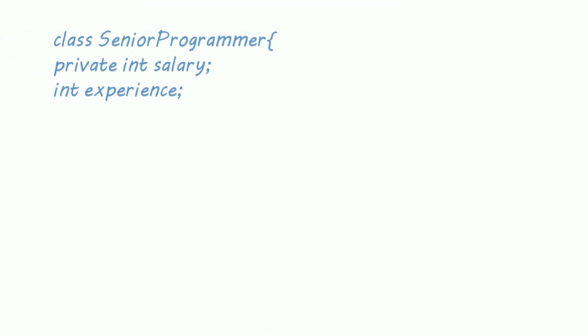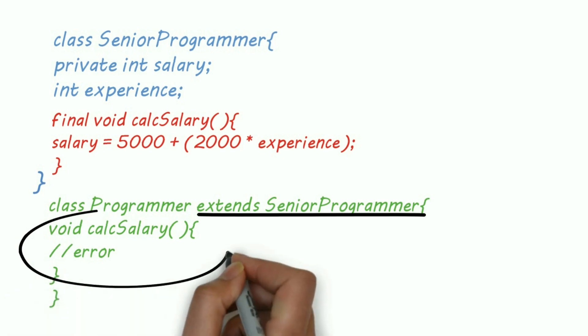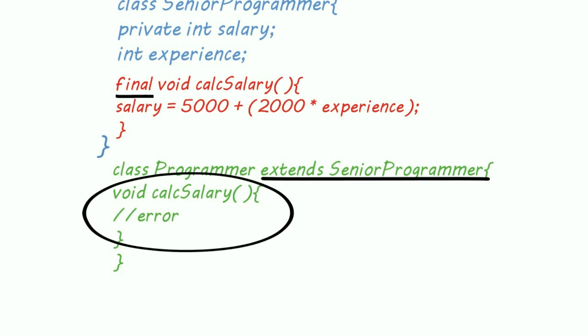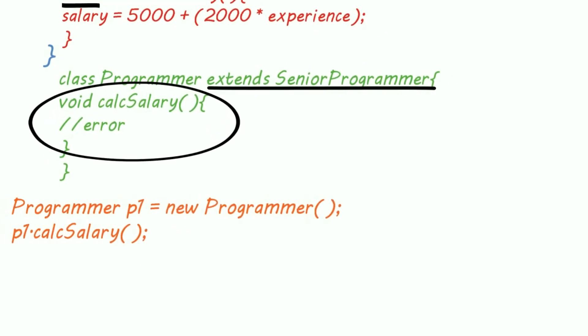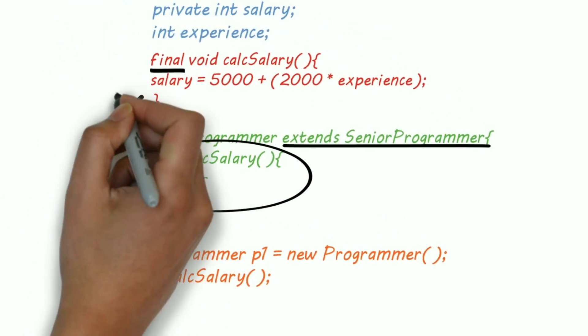Suppose I have created two classes, SeniorProgrammer and Programmer, where the Programmer class extends SeniorProgrammer. There is a method calculateSalary which calculates salary depending upon the experience. I don't want anyone to override or mess with this method, therefore I will declare it as a final method. So the Programmer class object can call the final method but can't override it.